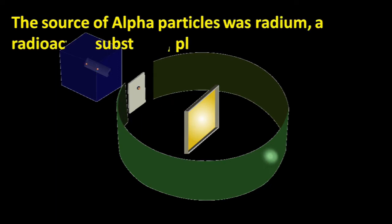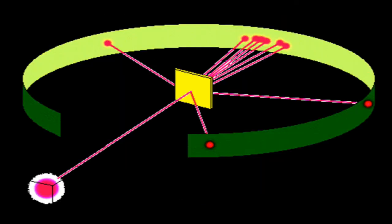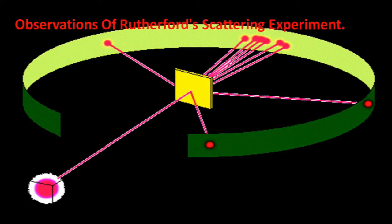The source of alpha particles was radium, a radioactive substance placed in a block of lead. Slits were used to get a fine beam for observation of Rutherford's scattering experiment.